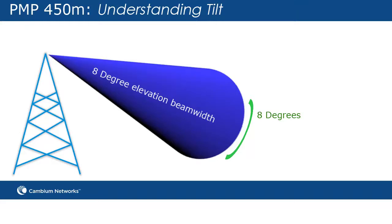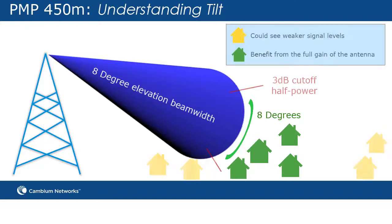Cambium's PMP450M has an 8-degree elevation beam width. As a result, subscriber modules within the 8-degree beam width benefit from the full gain of the antenna within 3 dB of the published antenna gain. Subscriber modules outside of the 8-degree beam width could see weaker signal levels.